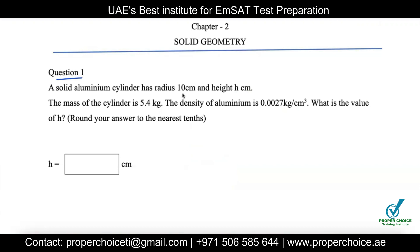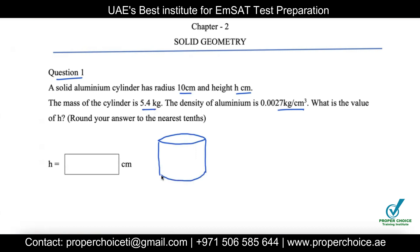The mass of the cylinder is 5.4 kg and the density of aluminum is 0.0027 kg per centimeter cube. What is the value of h? Round your answer to the nearest tenths. The question is asking us to find the height of the cylinder. The radius r is given as 10 cm, and the mass and density are also given.